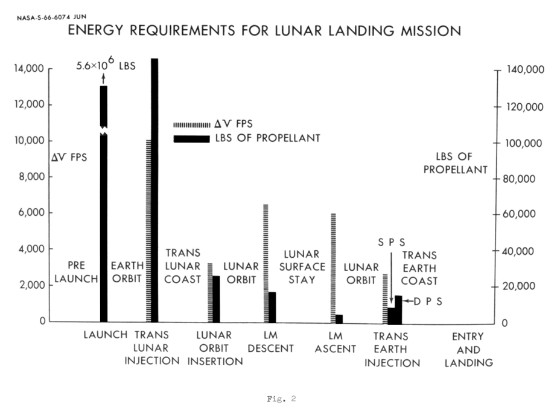For reentry from LEO, the delta-v required is the orbital maneuvering burn to lower perigee into the atmosphere; atmospheric drag takes care of the rest.